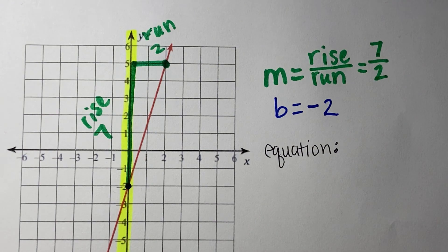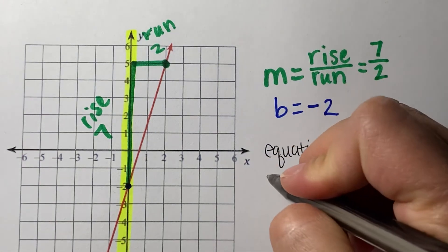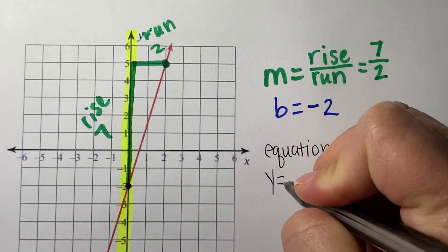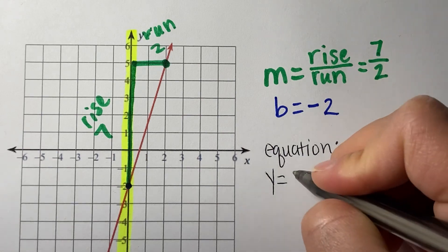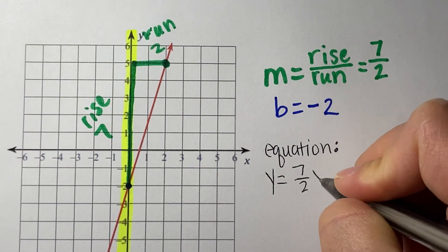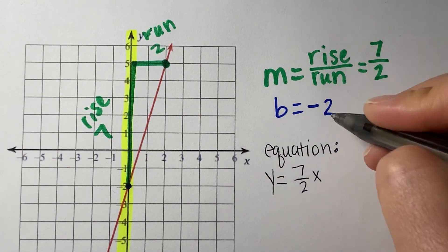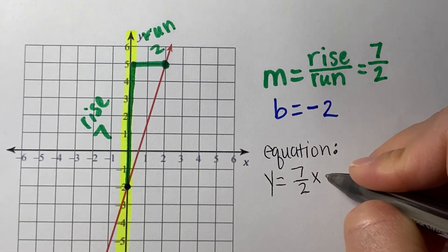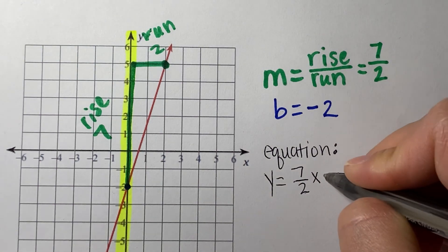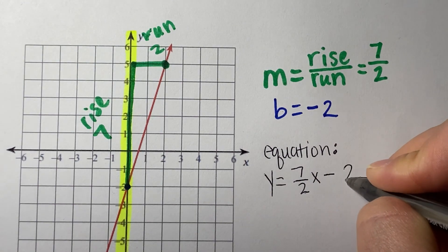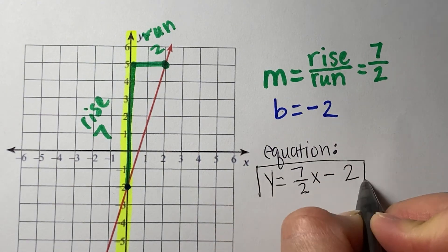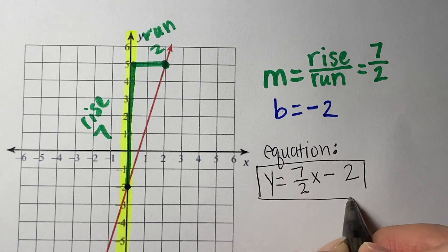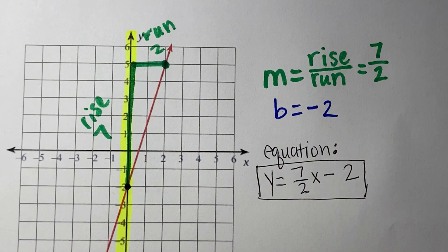Counting the rise: it goes up 1, 2, 3, 4, 5, 6, 7 — so my rise is 7. My run is to the right, which is 2. Since my rise is positive 7 over run 2, we don't need to simplify or convert to a decimal. The equation is y equals seven-halves x — and since b is negative, we don't write plus negative; it's just minus 2. So the equation is y equals seven-halves x minus 2. Now it's your turn to practice.